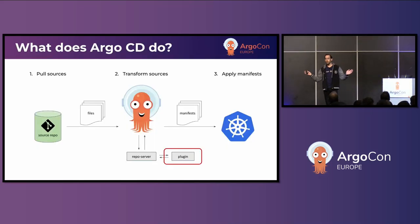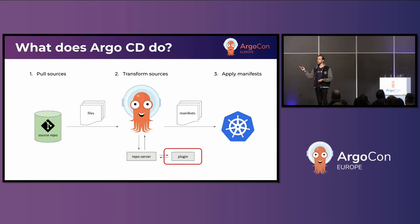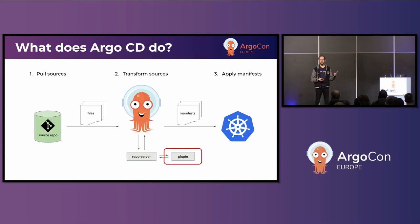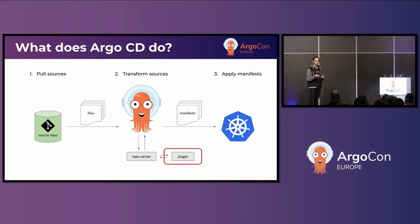Most people probably know this, but just to contextualize the component I'm going to talk about in Argo CD, I want to give a quick overview. It has three basic jobs: pull sources from something like Git or a Helm repository; transform those files into manifests; and apply those manifests to Kubernetes. The part I'm going to focus on is called Repo Server — a pod that runs with Argo CD. It does those first two jobs: pull sources and transform them. It has built-in functionality to use Kustomize and Helm, but it also has a system to talk to a sidecar that presents a service which can transform manifests.